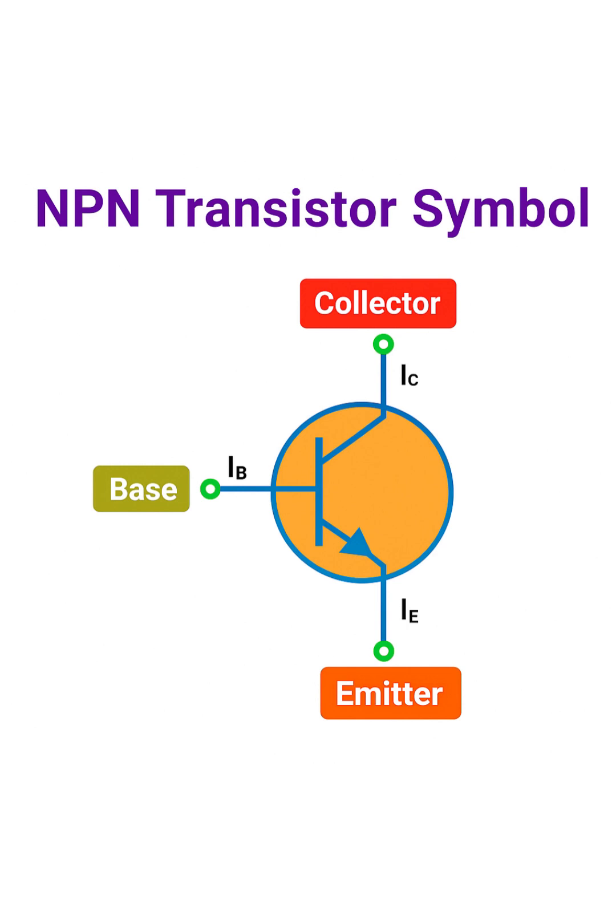So, to recap, we have the collector, base, and emitter. The base controls the flow of current from collector to emitter. And for an NPN transistor, the arrow on the emitter is not pointing in.